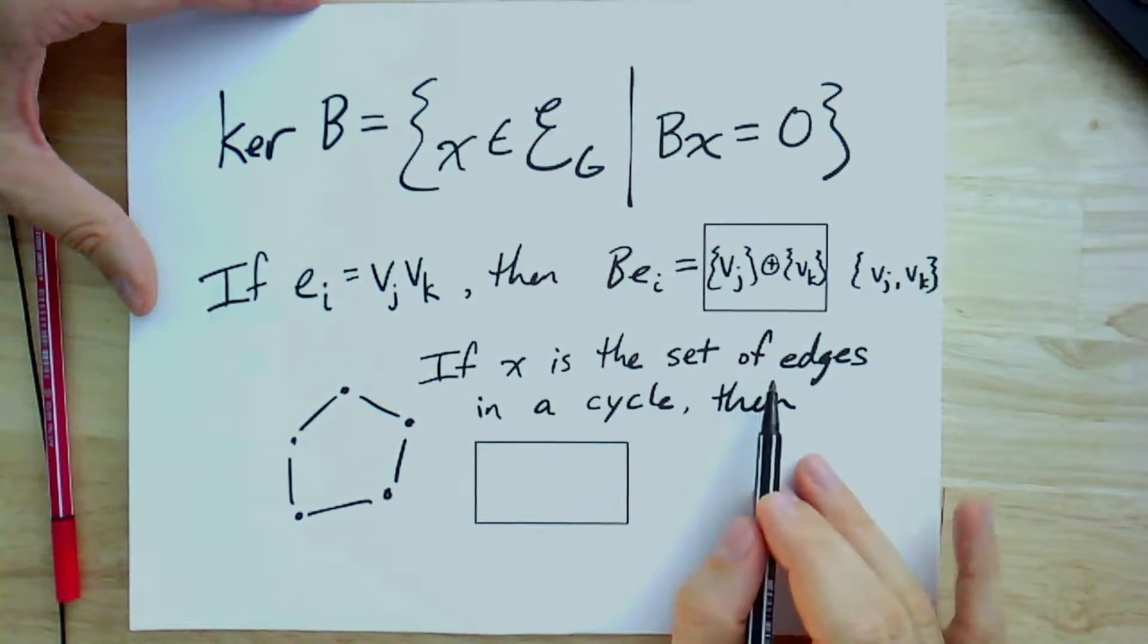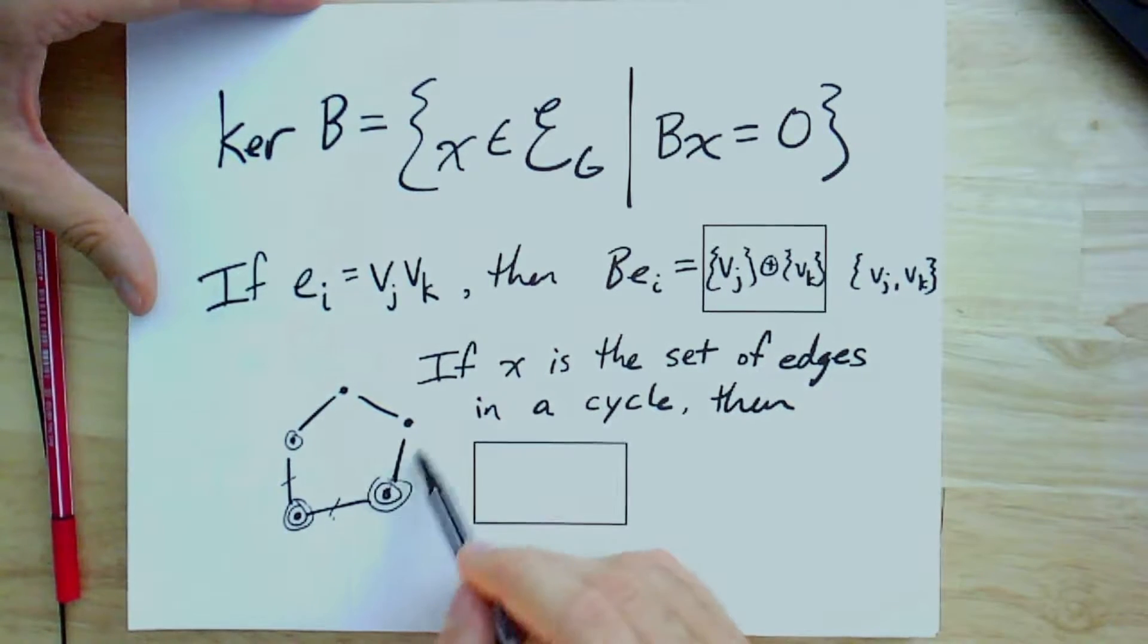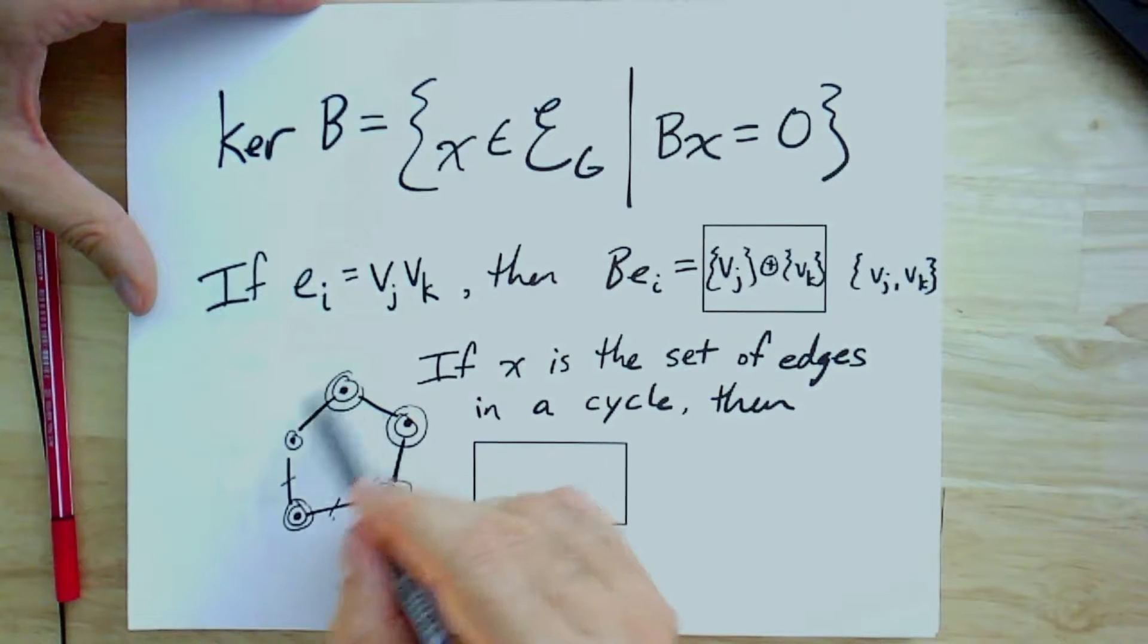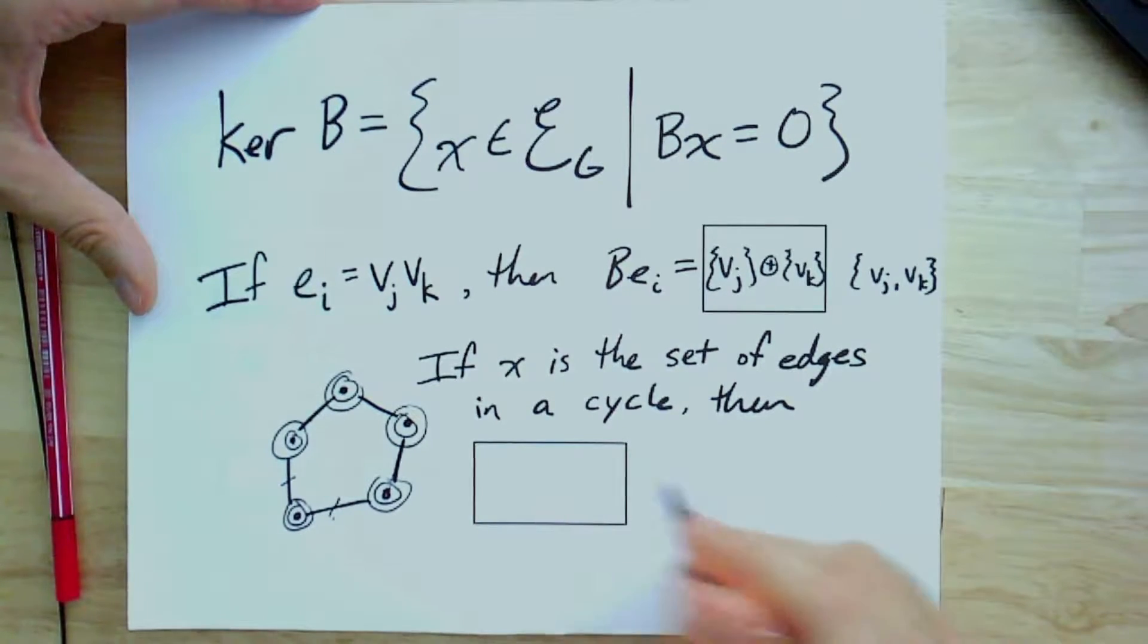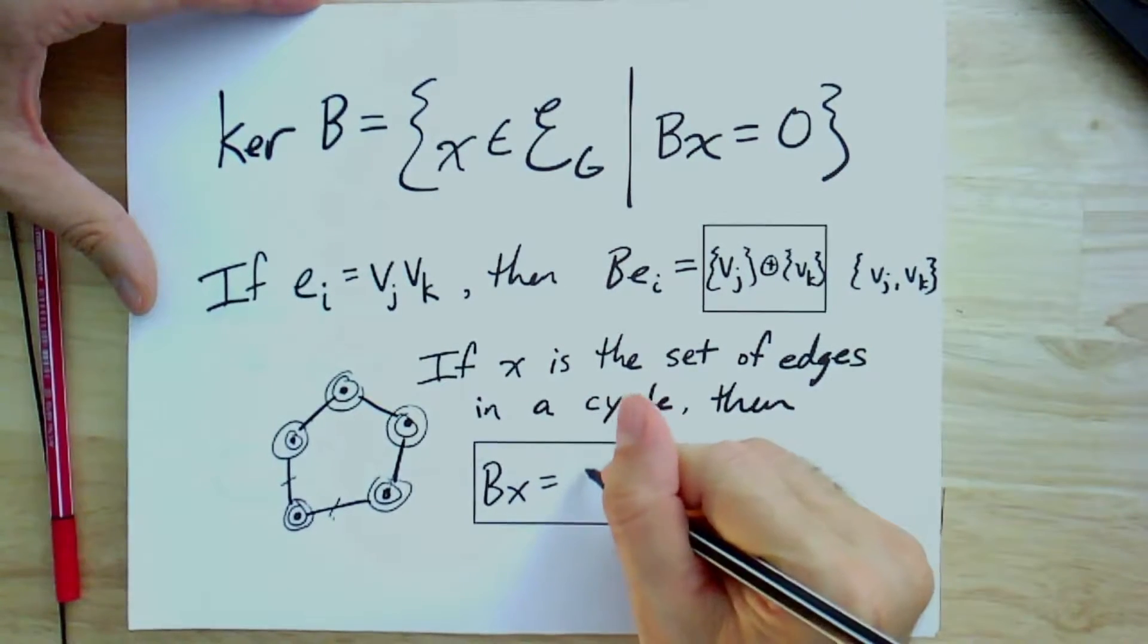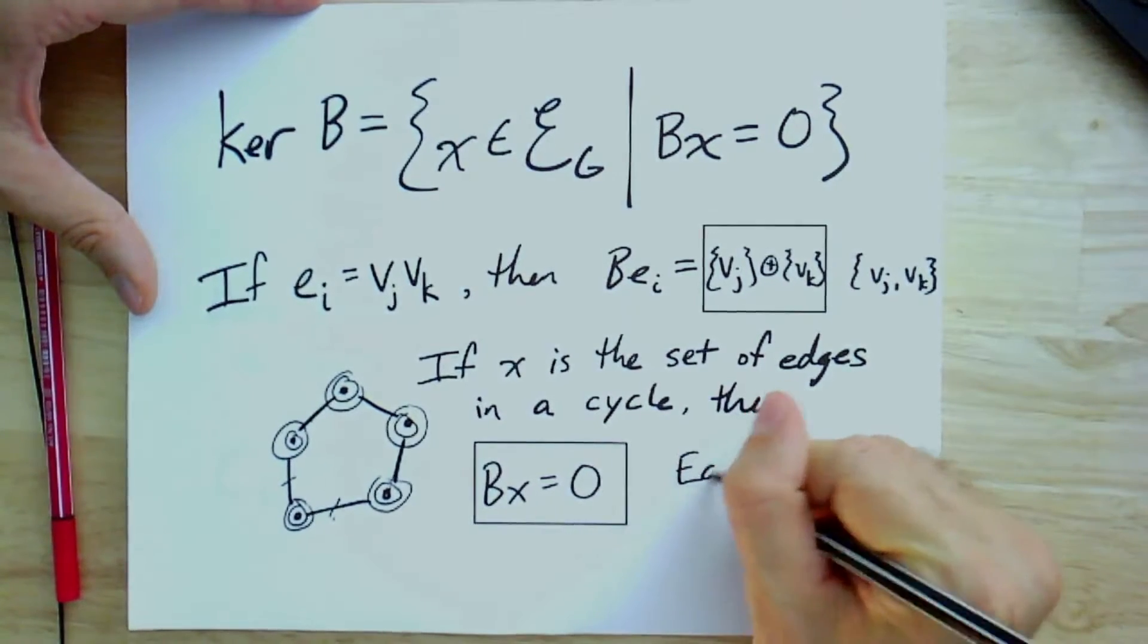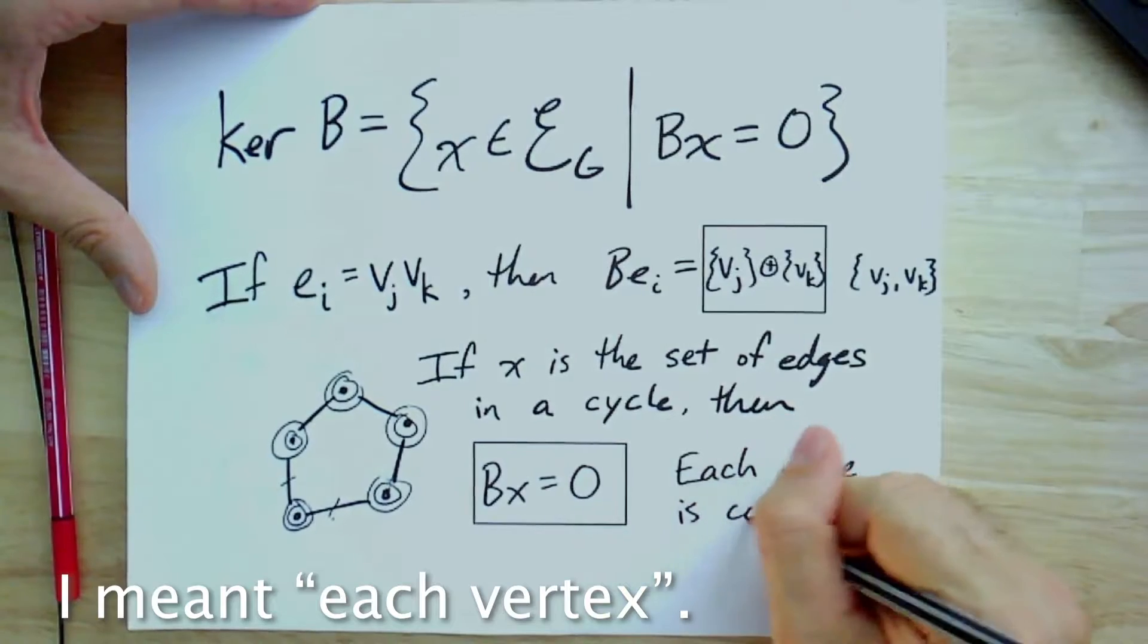Now, if x is the set of edges in a cycle, hopefully you could start to see what would happen if I add up B applied to each of these edges. I'm going to get, for instance, if I start with this one, I'm going to get these two. And then if I add in this one, it'll get these two. And you'll see that this one has been counted twice, so it will cancel out. And as I go around, every single vertex is counted exactly twice, once from each of the edges coming out.